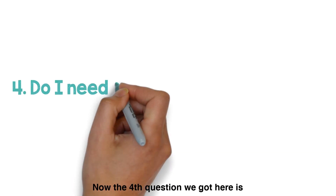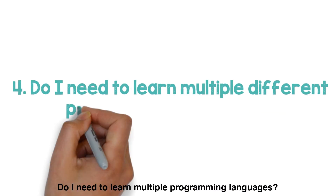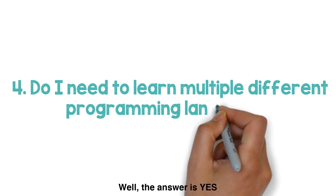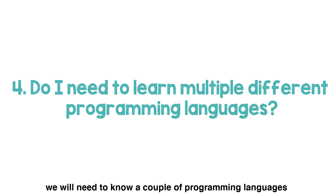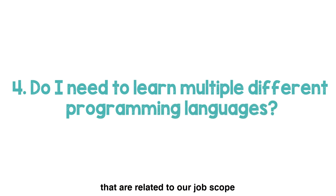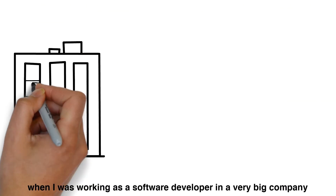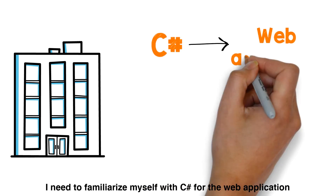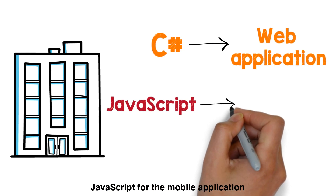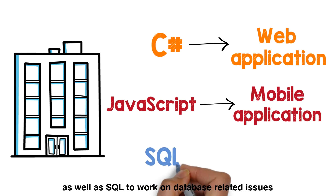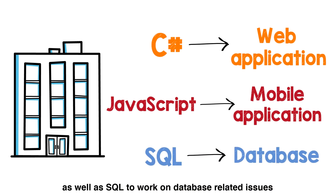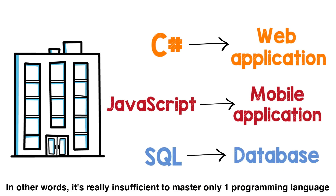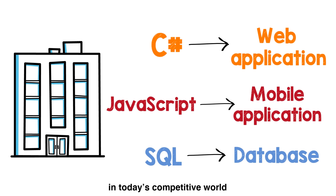The fourth question we got here is: do I need to learn multiple different programming languages? Well, the answer is yes. We will need to know a couple of programming languages that are related to our job scope. To share my own experience, when I was working as a software developer in a very big company a couple of years back, I needed to familiarize myself with C Sharp for the web application, JavaScript for the mobile application, as well as SQL to work on database-related issues. In other words, it's really insufficient to master only one programming language in today's competitive world.